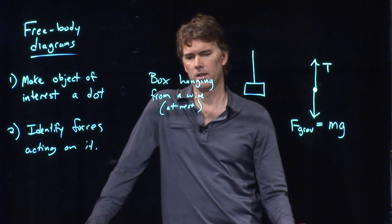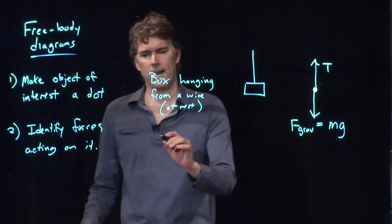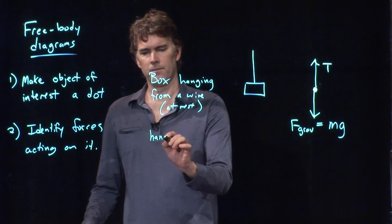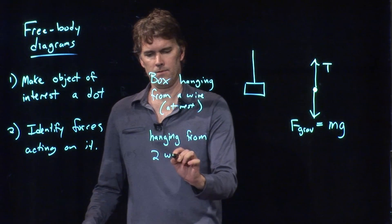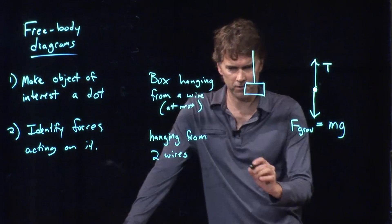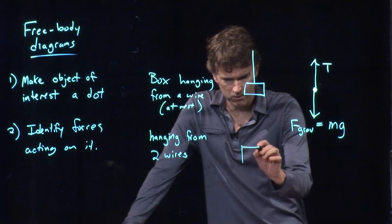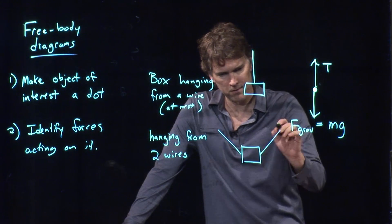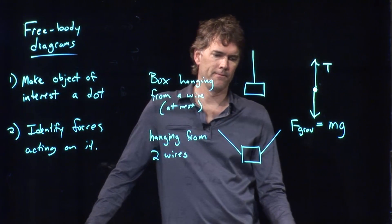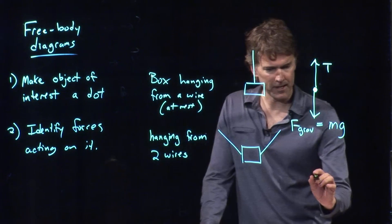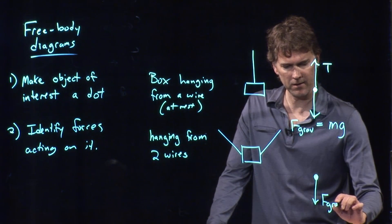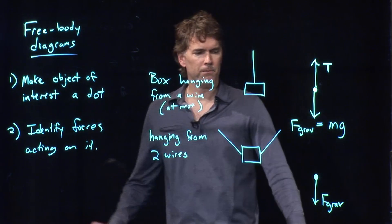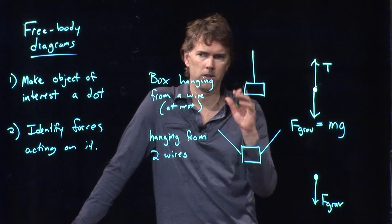All right, let's make it a little more complicated now. Let's hang it from two wires — and let's say that it looks like this. Now I need to draw my free body diagram for that box. I still have F gravity going down. But how should I draw the tension in the wires?